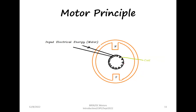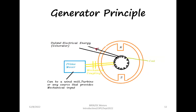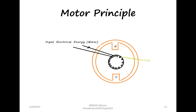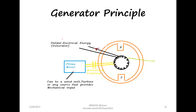If we provide a mechanical input instead — that is, instead of giving electricity into the coil, we couple it mechanically to a prime mover which can rotate the armature — when this armature is rotated in the magnetic field, it produces a current which can be taken out. So the armature, when rotated, provides electricity. At least theoretically, the same machine can be used either as a generator or a motor based on the input given to it. The prime mover is a machine which provides a mechanical input to the armature; it can be another motor, a windmill, a turbine, or any source providing mechanical input.